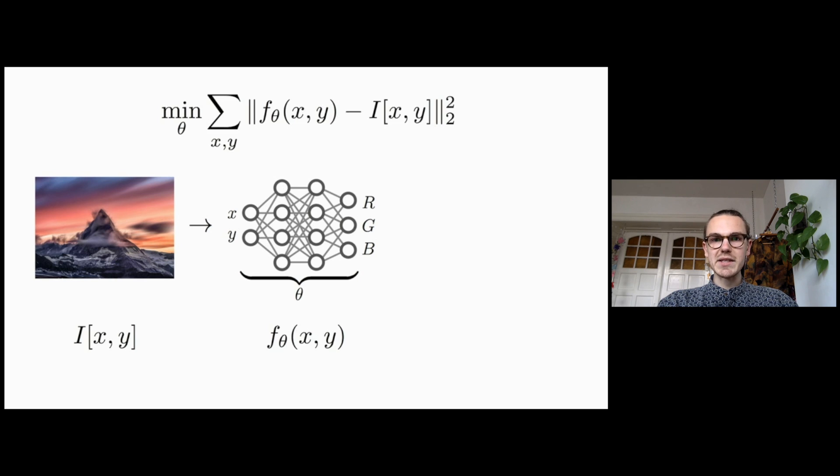Let's denote i x, y as the RGB values in the image, and f theta x, y as the output of the neural network. To encode an image, we optimize the weights theta to minimize the mean squared error between a compressed reconstruction of the image and the original image.